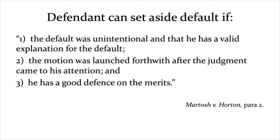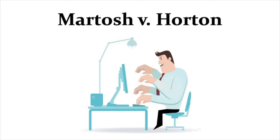On branch three — good defense on the merits — Horton also fails. The judge says it is plain that he published this defamatory email. The court looks at whether, hypothetically, had the defendant responded with a statement of defense and the matter been adjudicated on its merits, how strong would the defense appear — and the answer here is not strong at all, because it's clear he wrote the email and the plaintiff suffered the damages. The motion to set aside default judgment is dismissed, and Martosh can go ahead and enforce the judgment and garnish the wages.